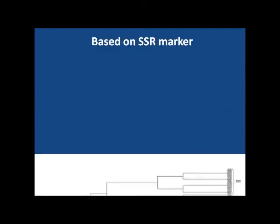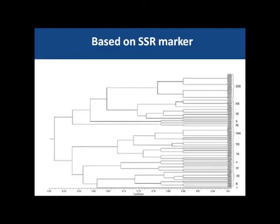Based on SSR marker analysis, cluster 7 consists of accessions having good starch content and yield per plant.